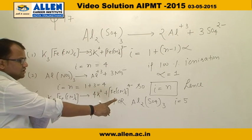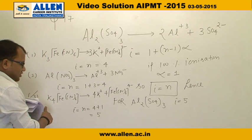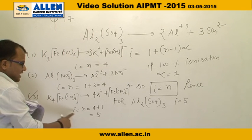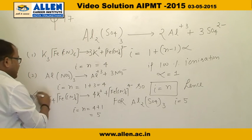Al₂(SO₄)₃ has i = 5, and option three K₄[Fe(CN)₆] also gives i = 5. Therefore, the correct answer is option three.